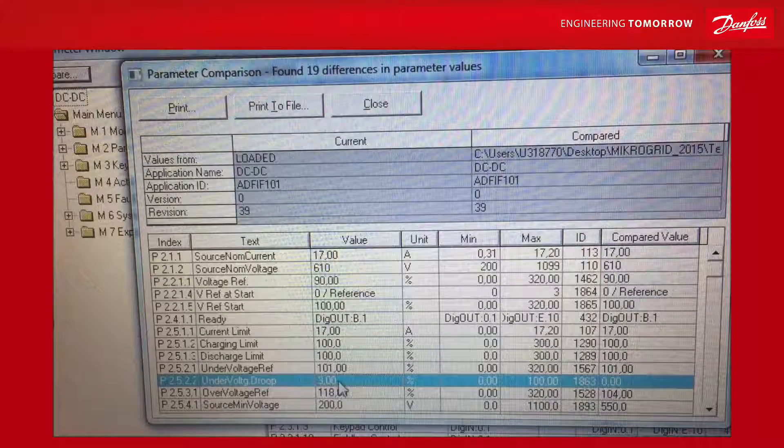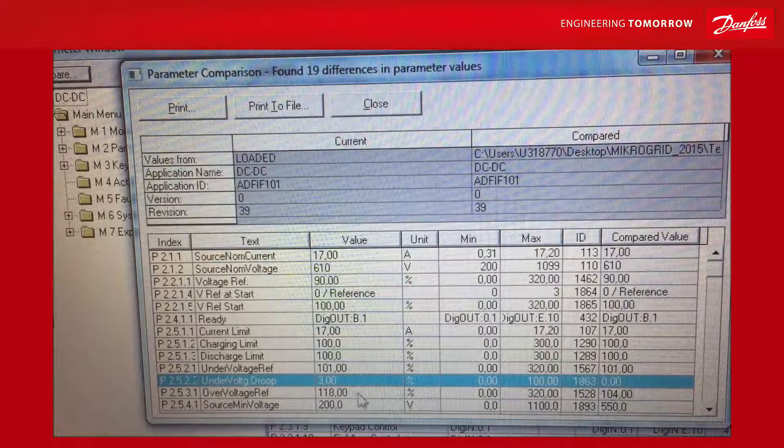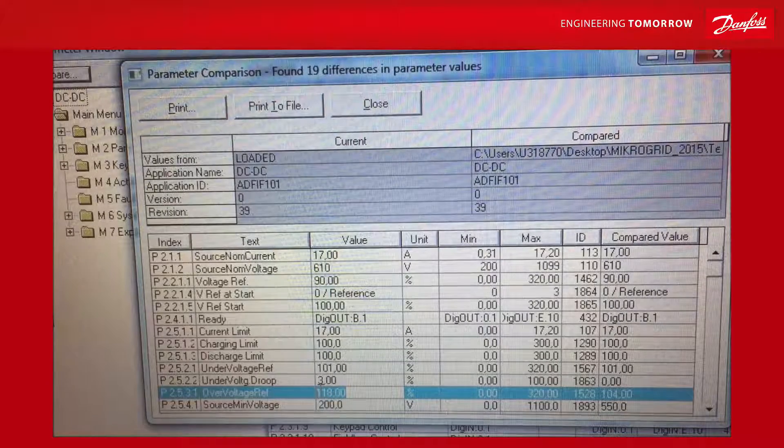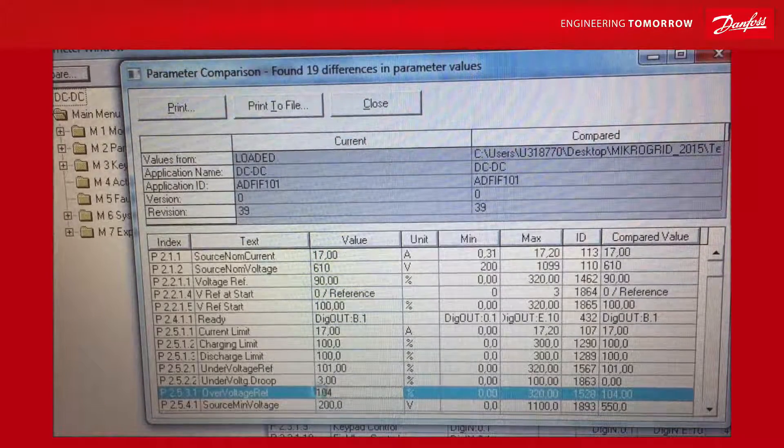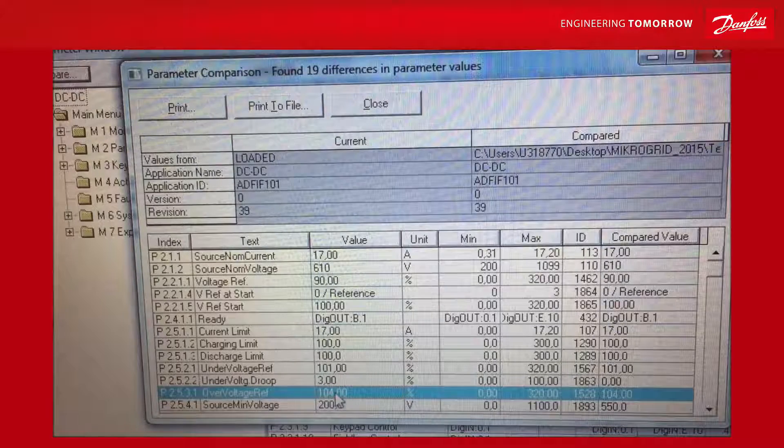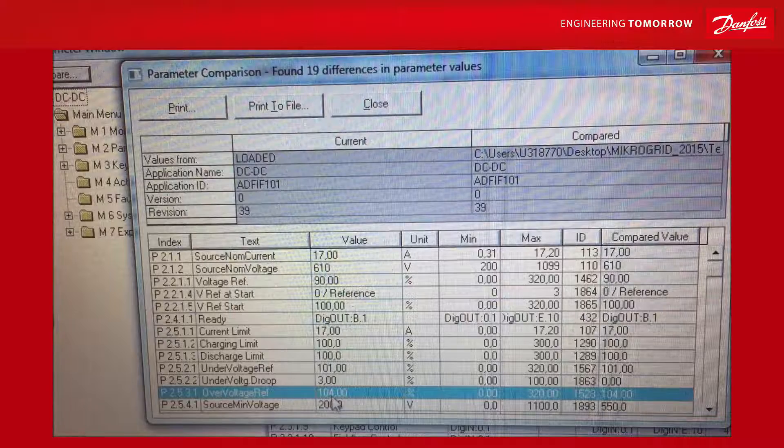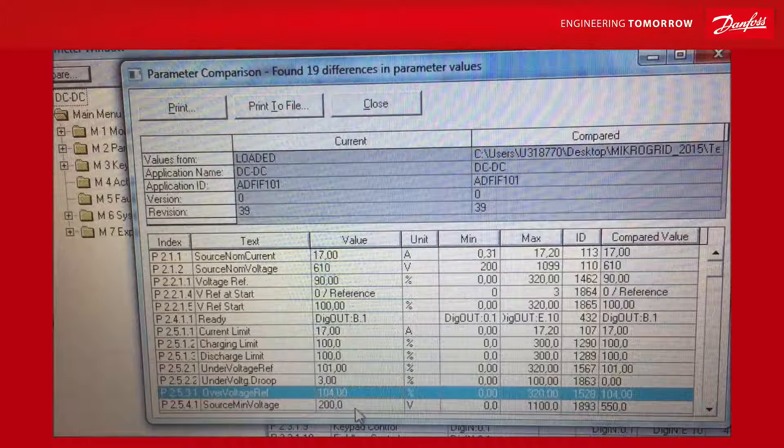Under-voltage drooping, I set to 3%. Over-voltage reference, I put to 104. Which means that I am going to bounce my DC voltage between 101 and 104 with a 3% drooping.